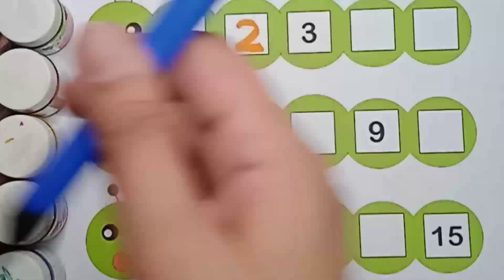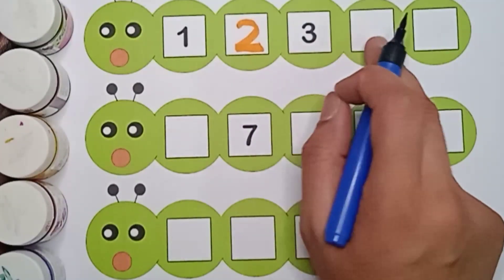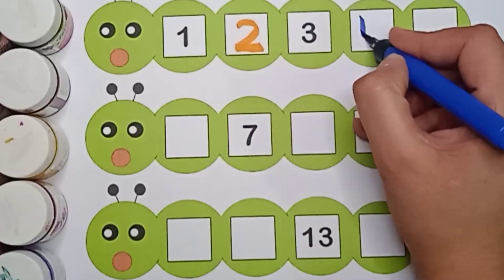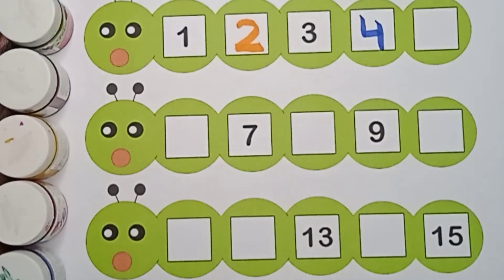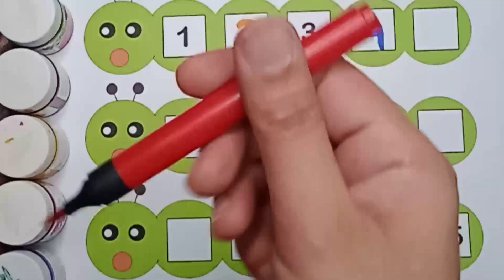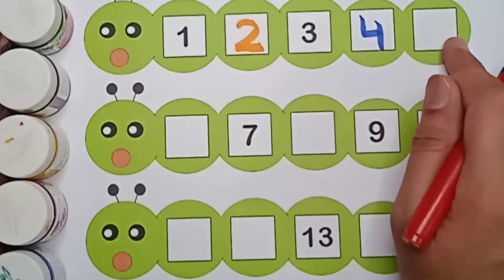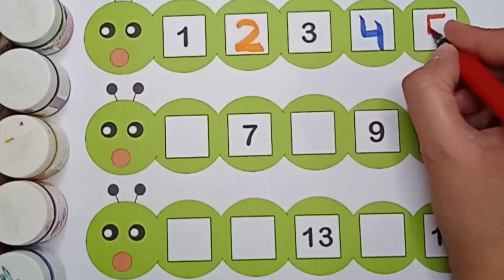Blue color. 3. Next number is 4. What comes after 3? 4. Red color. 4, 5. It's 5.